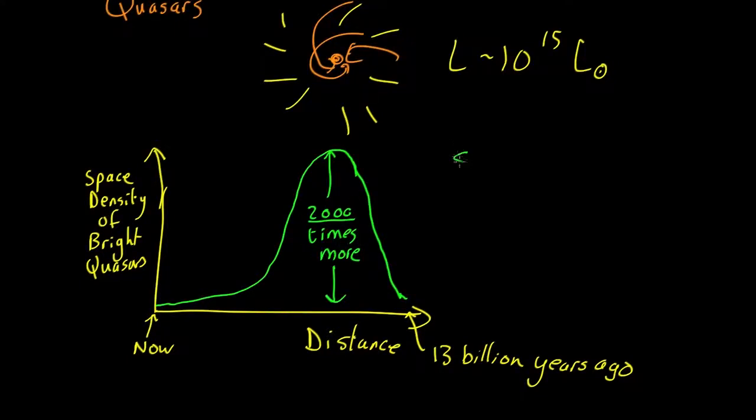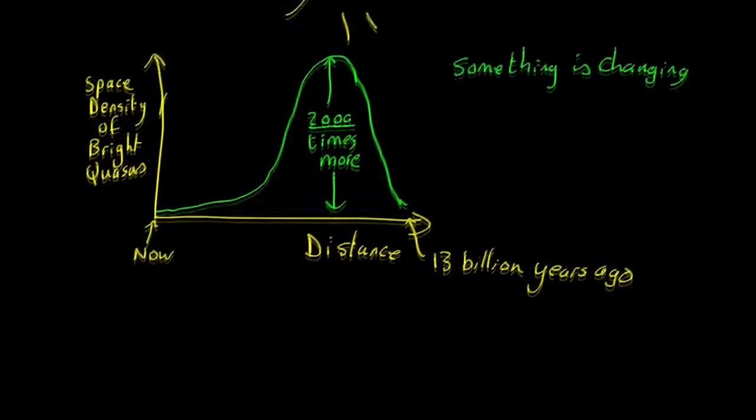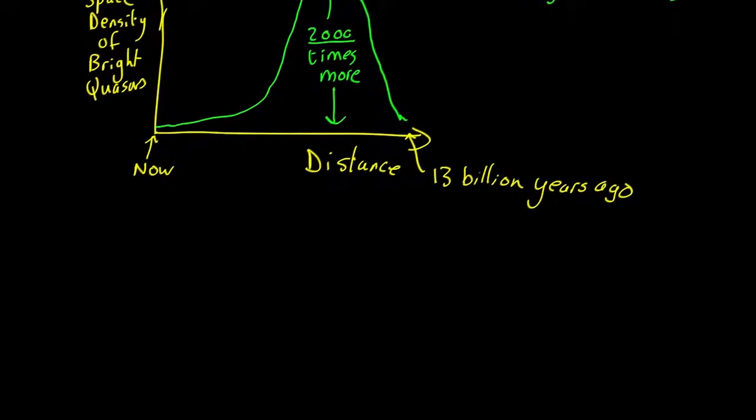So something is changing. Evidence for the Big Bang? Well, some people disputed this. It was only one sort of thing and no one really knew what quasars were. In fact, we still don't. But then people started getting better and better telescopes, looking more and more detailed at what they could see. And other differences started to show up.